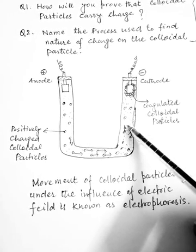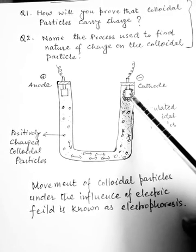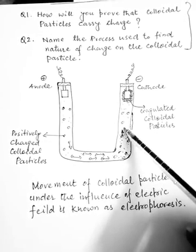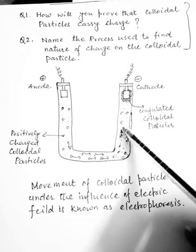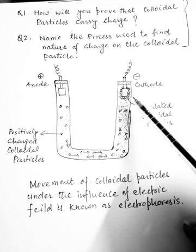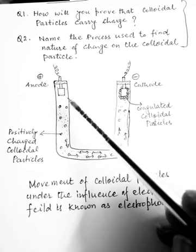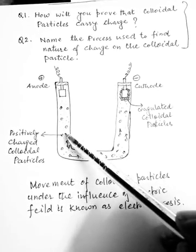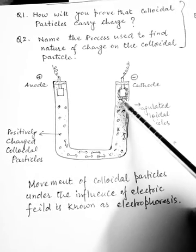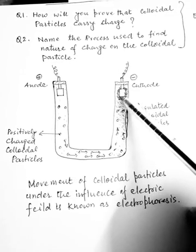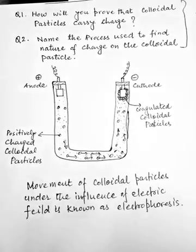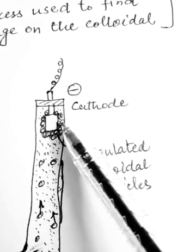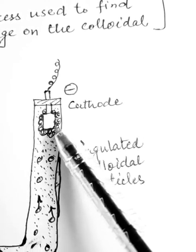Since they are traveling towards the negatively charged electrode, it proves that they are positively charged. Also, since they are moving under the influence of an electric field, it proves that they are carrying some charge. If colloidal particles were moving towards the positively charged electrode instead, that would indicate negative charge. The coagulated particles collect around the platinum cathode.